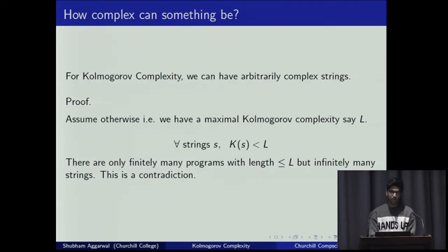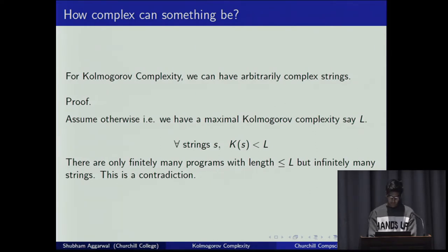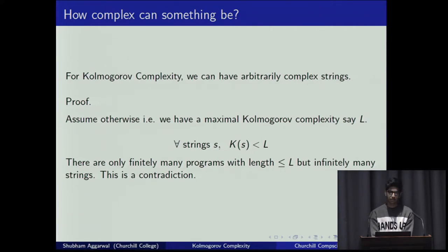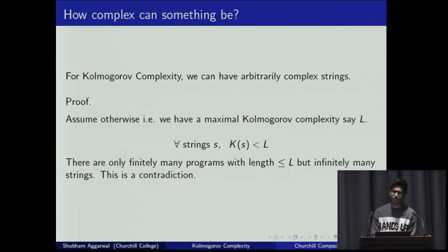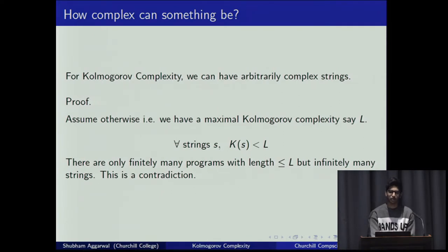A natural question is: how complex can something actually be? If you're talking about Kolmogorov complexity, the answer is that something can be arbitrarily complex. A simple argument: if there were a maximal complexity, there would be only finitely many programs under that length, hence finitely many outputs — but there are infinitely many strings. So there cannot be a maximal Kolmogorov complexity, meaning there are things with arbitrarily large Kolmogorov complexity.